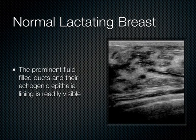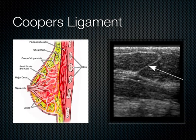In the normal lactating breast, fluid-filled ducts become much more prominent because they're filled with milk. You can see the epithelial layer quite prominently within the ducts. You can also quite easily see the suspensory ligaments known as Cooper's ligaments. They look like hyperechoic lines, and when you get them at the right angle, you can see that very obvious hyperechoic line throughout the breast tissue.